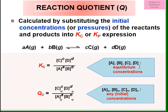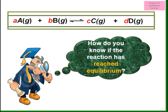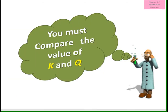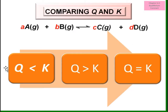ABC are the equilibrium concentrations. If Qc, it means the concentration of ABC at the initial or any given point in time. So how do you know if the reaction has reached equilibrium? You must compare the value of Q and K. There are three cases: if Q equals K, the system has achieved equilibrium; if Q is smaller or larger than K, the system is not at equilibrium.